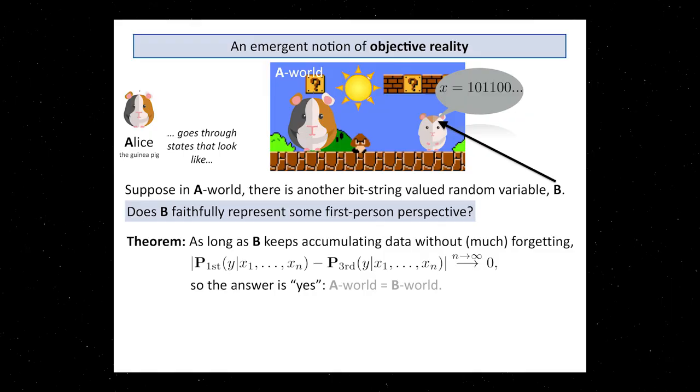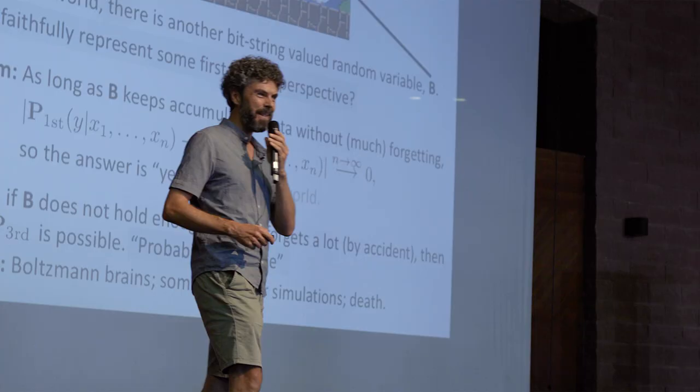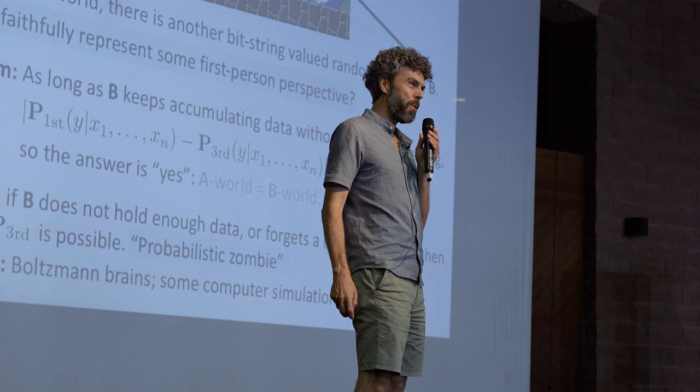However, certainly this only applies in the limit and only under some conditions. So what you get here automatically, and this is the fun part, you get situations where first and third person probabilities are different. Examples would be Boltzmann brains. Turns out that they would have this property. So this would be a probabilistic version of zombies. Nobody must be afraid that Boltzmann brain, because Boltzmann brains are zombies, that'd be the take home message.